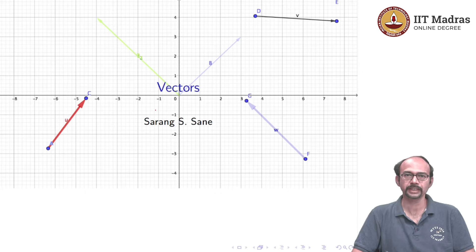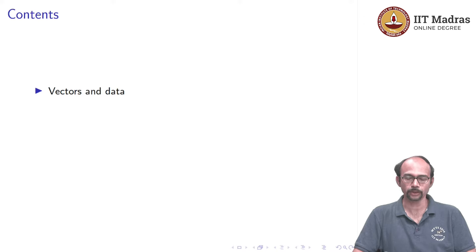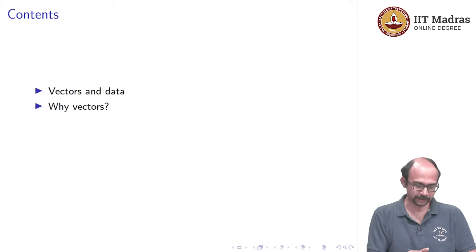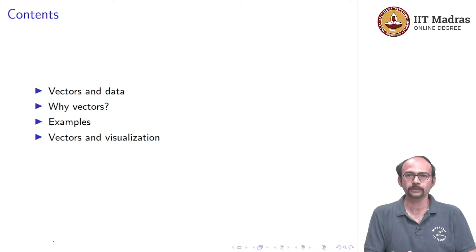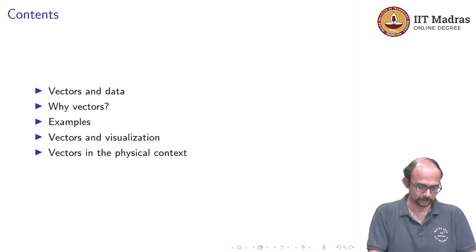What are vectors? On this screen, we can see some vectors you have probably studied in the previous course — something with arrows and directions and so on. I am going to tell you a slightly different story about what vectors are. In this video, we are going to talk about vectors and data, why vectors, some examples, vectors and visualization, and vectors in the physical context.